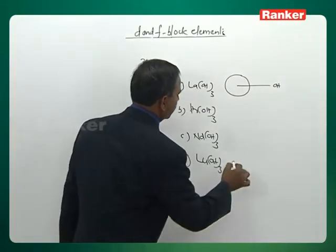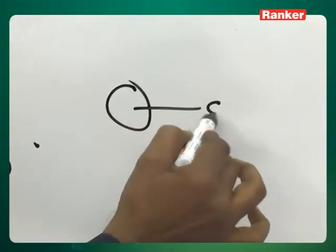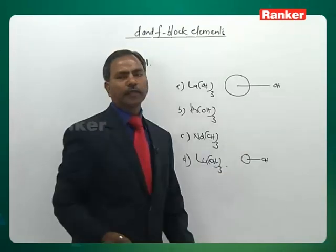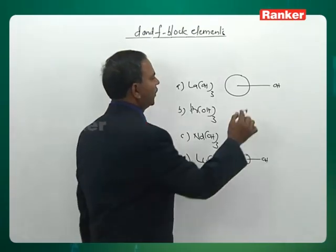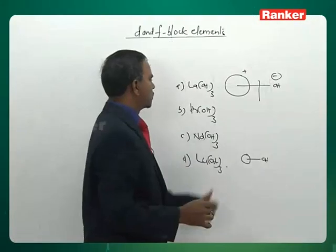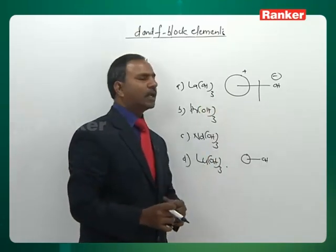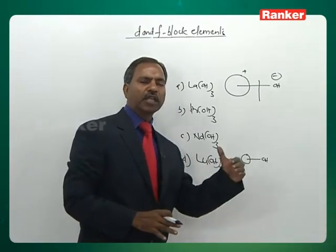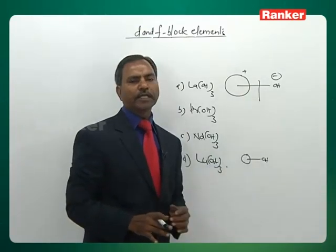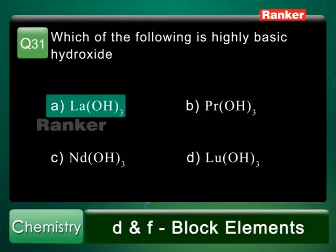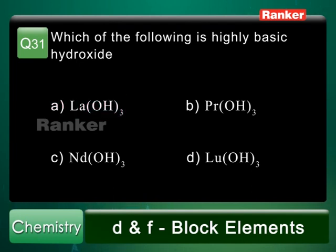For lutetium, which is smaller in size, the Lu–OH bond length is lower. Whichever has the greater bond length has less bond energy, so it easily dissociates and easily ionizes, producing more OH⁻ ions. Therefore, lanthanum hydroxide is the most basic, and answer A is correct for question 31.